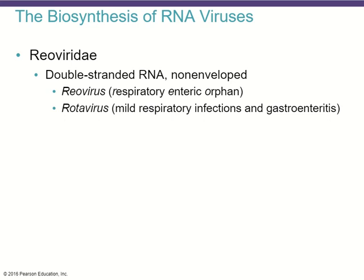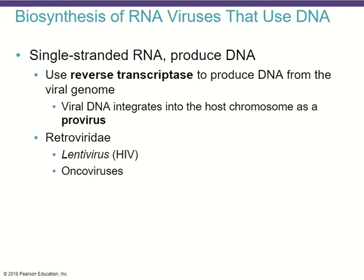There are special viruses that have a single strand of RNA that, once in the host, will be used to produce viral DNA. Reverse transcriptase is used to produce DNA from the viral genome, and viral DNA then integrates into the host chromosome as a provirus. These are examples of retroviruses, where they encode a form of their genome into the host itself. One example is lentivirus, which causes HIV, and there are also oncoviruses.